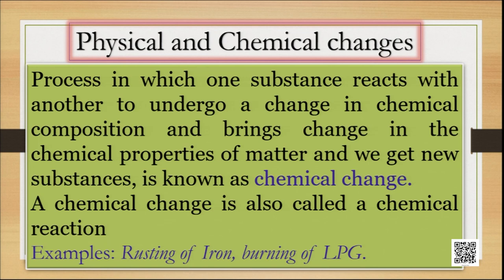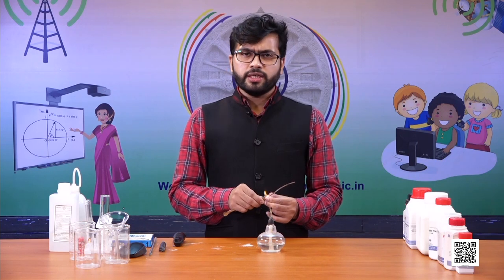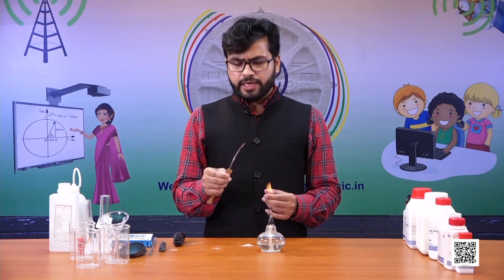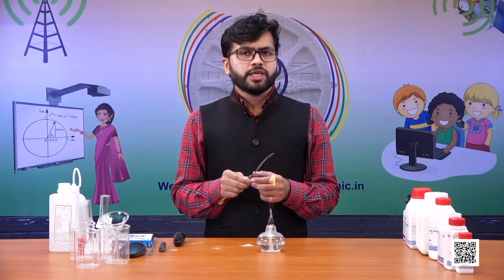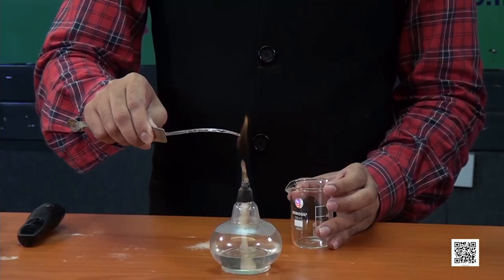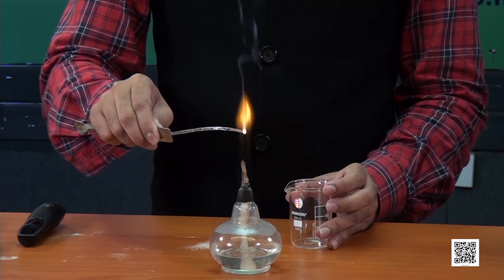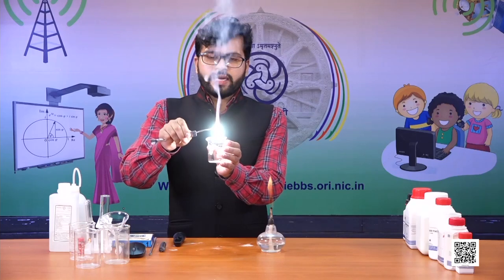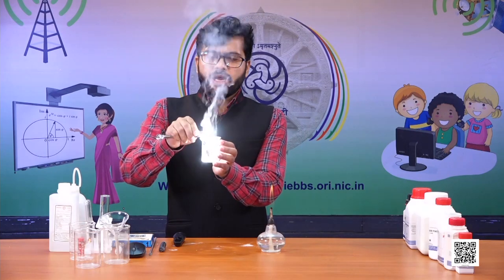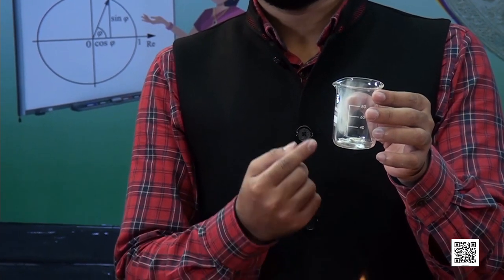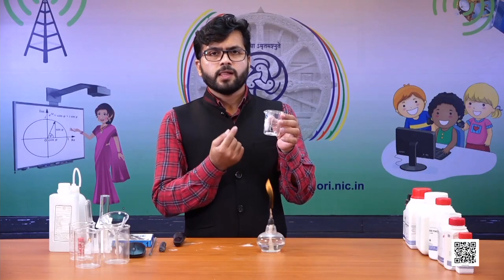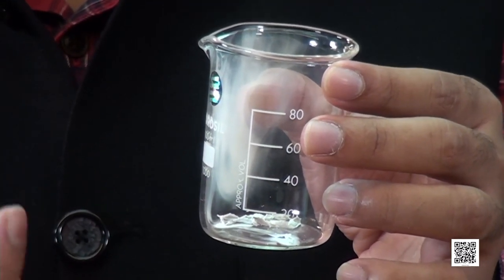A chemical change is also called a chemical reaction. Examples of chemical reactions include rusting of iron and burning of LPG — all these are examples of chemical changes. Let us perform certain activities to understand chemical changes in a better way. I have taken a cleaned magnesium ribbon and I am going to put it into the flame. When I put the magnesium ribbon into the flame, you can observe that the magnesium ribbon is burning with a dazzling white flame and gets converted into ash. I have collected that ash — this is a chemical change because magnesium metal has converted into magnesium oxide.